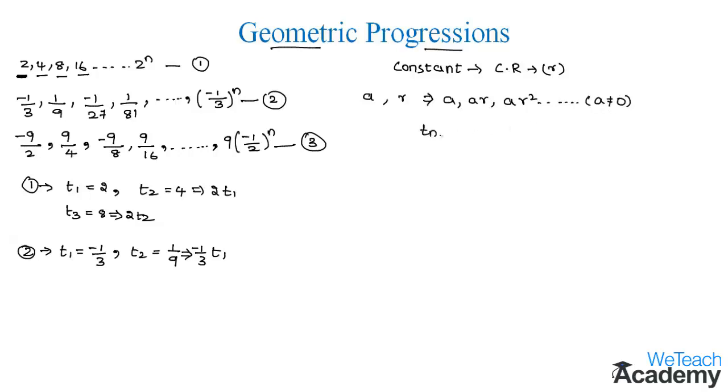So we have the term of geometric progressions as r into tn minus 1 where r value is not equal to 0. That is nothing but we get here r value just by transferring tn minus 1 to the other side. So we get this as r is equal to tn divided by tn minus 1.